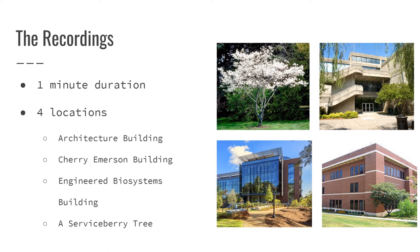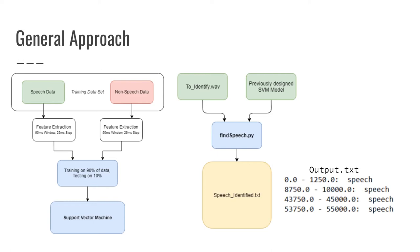Our general approach to processing these segmented audio signals is shown here. First, we manually classified subsections into speech and non-speech data. Feature extraction was conducted on both sets, then used cumulatively to train and test a support vector machine — an SVM. This SVM was saved as a .npy file and then used to extract speech segments from unknown audio input files. An example of this classification output is shown here, where the start and end time of each segment is given in milliseconds alongside its speech classification.